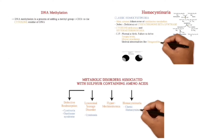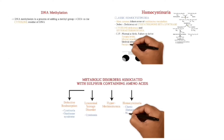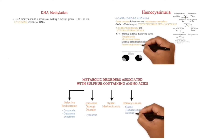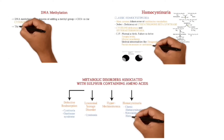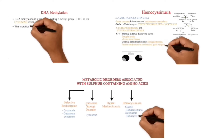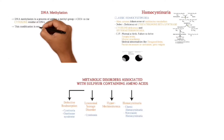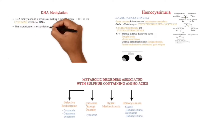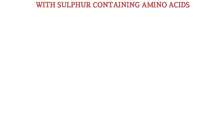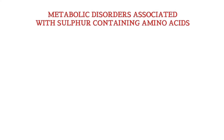Hello everyone, this video is the second in a series on the metabolism of sulfur-containing amino acids. We will begin with the classification of metabolic illnesses linked to sulfur-containing amino acids.